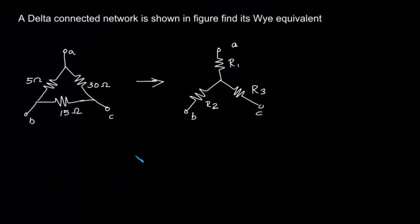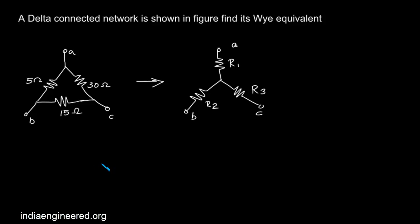We are given a delta network and we are asked to find out its equivalent Y network. We have to do a delta to Y conversion. It is possible to derive this without using any formulas, but it is necessary that we must know the shorthand method to easily convert this, because most of the time we can easily reduce a circuit by using this kind of conversion, either delta to Y or Y to delta.